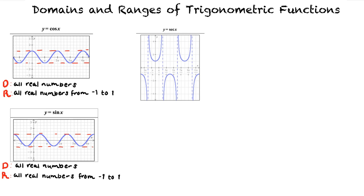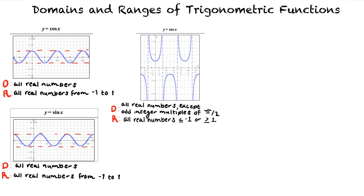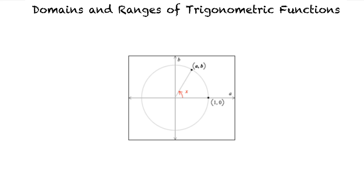The graph of y equals the secant of x looks like this. y equals the secant of x has the domain of the set of all real numbers except odd integer multiples of pi over 2, and the range is the set of all real numbers less than or equal to negative 1 or greater than or equal to 1. We can determine the domain by looking at an angle x on a coordinate plane. Note that for any angle x, the point A, B is where that angle terminates on the unit circle, and y equals the secant of x equals 1 over A.